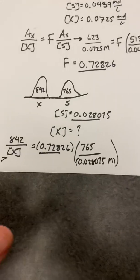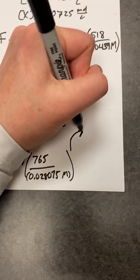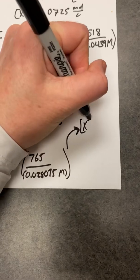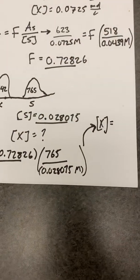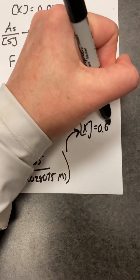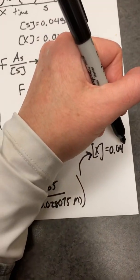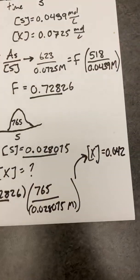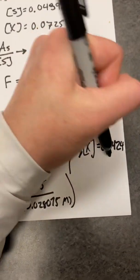And through a little bit of algebra, you can find out that X is equal to 0.0424 mol per liter.